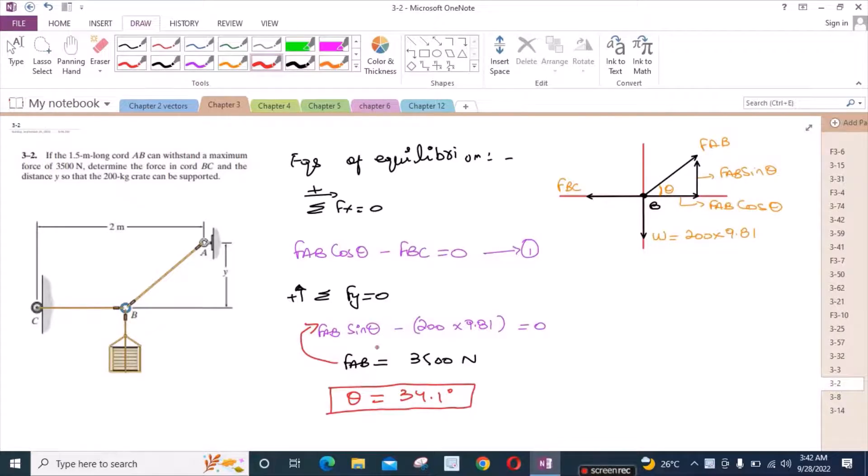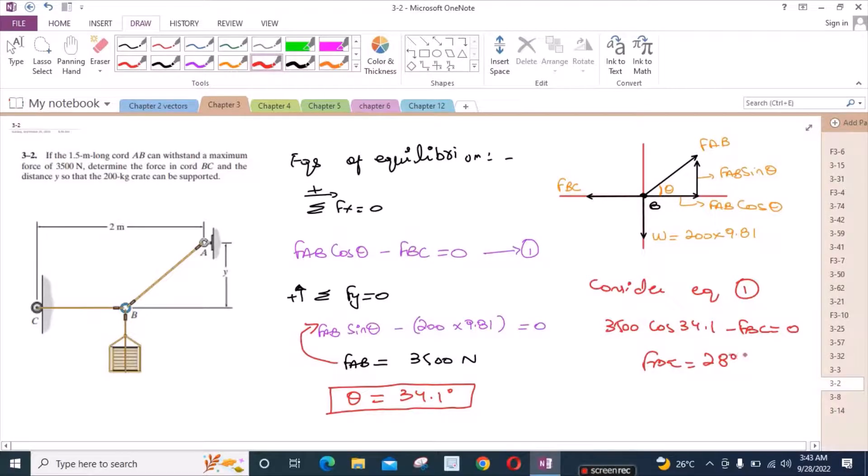But we have to find the force FBC. So what we have to do? We have to consider equation one. And put all these values, all the known values. We have FAB which is 3500 Newtons into cos 34.1 degrees minus FBC equals to zero. So FBC is equal to 2898.37 Newtons.